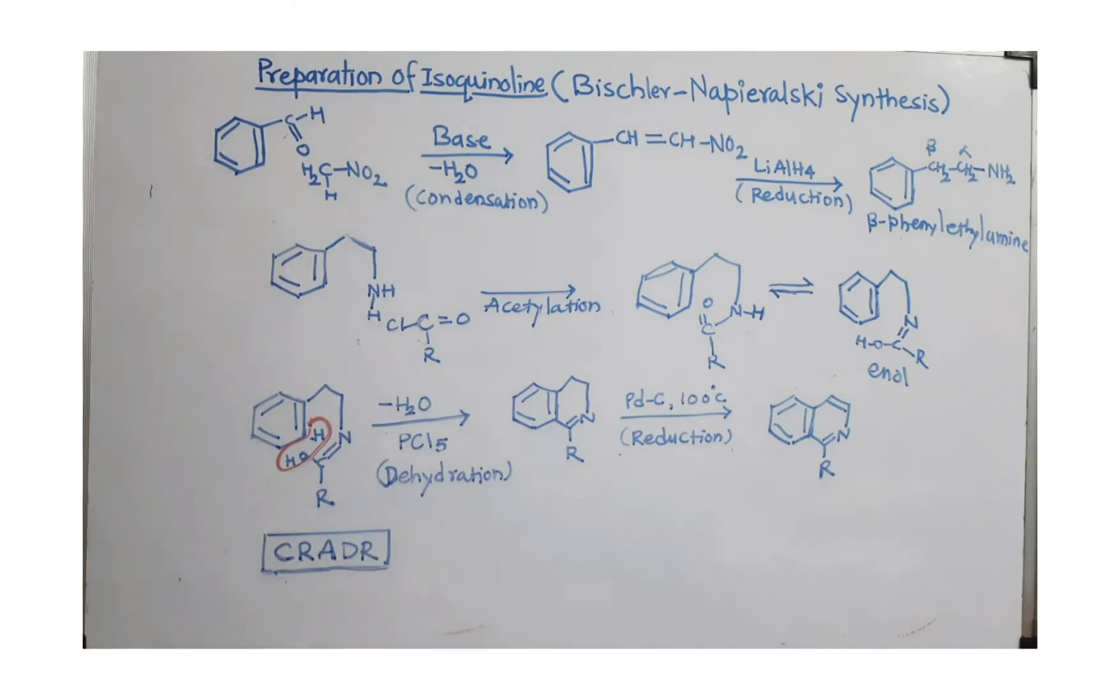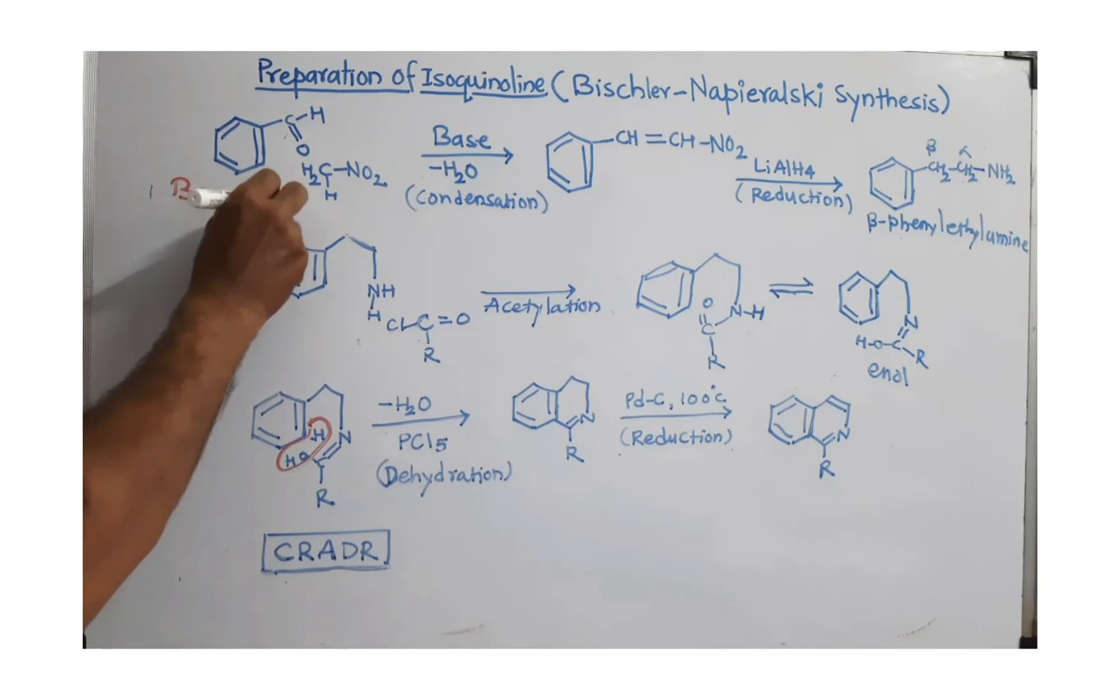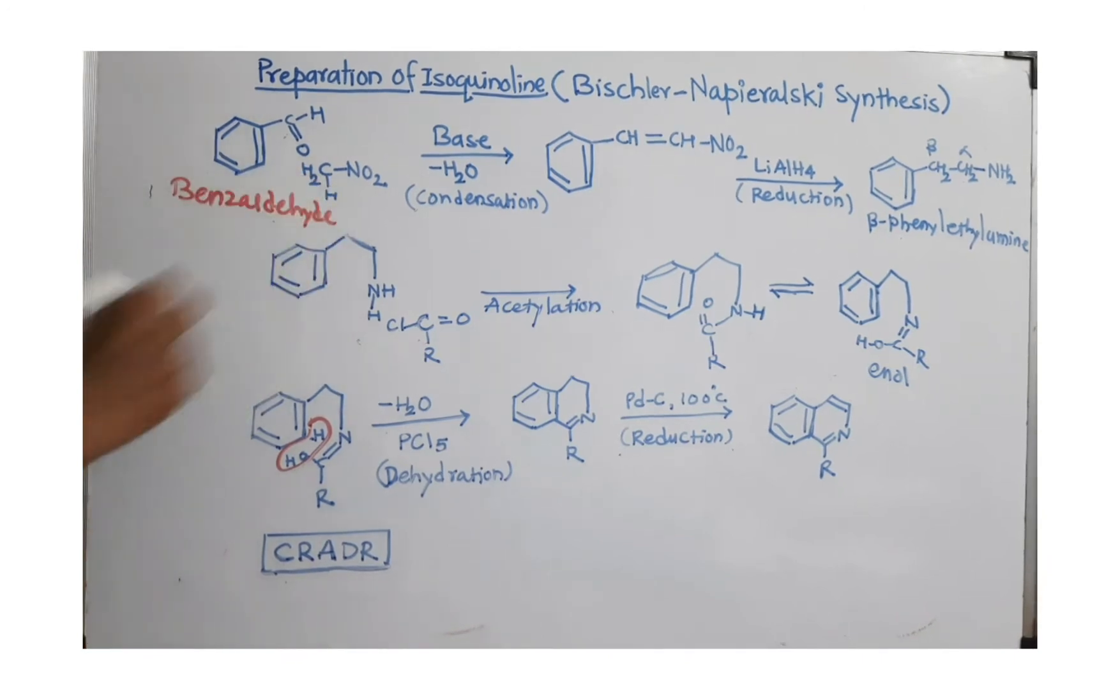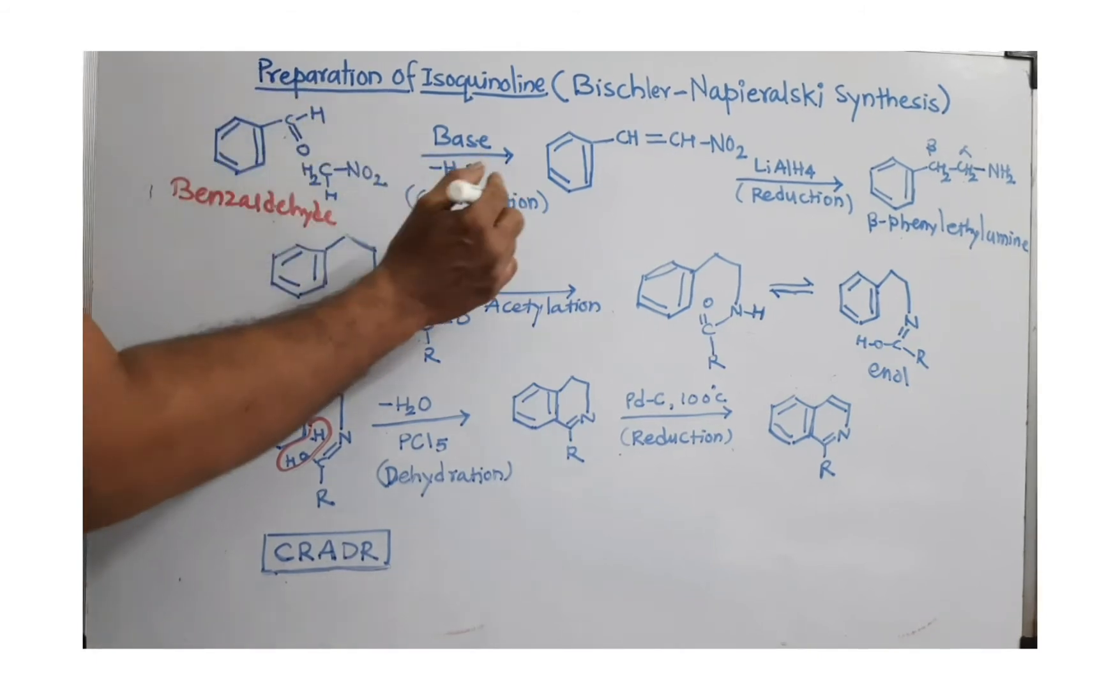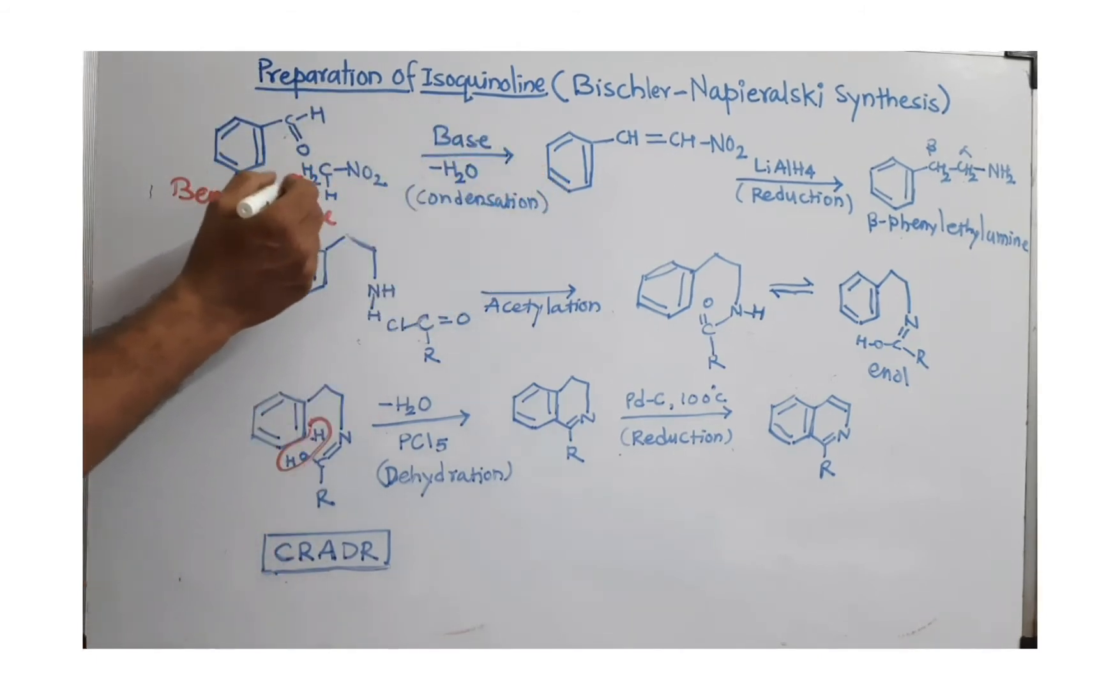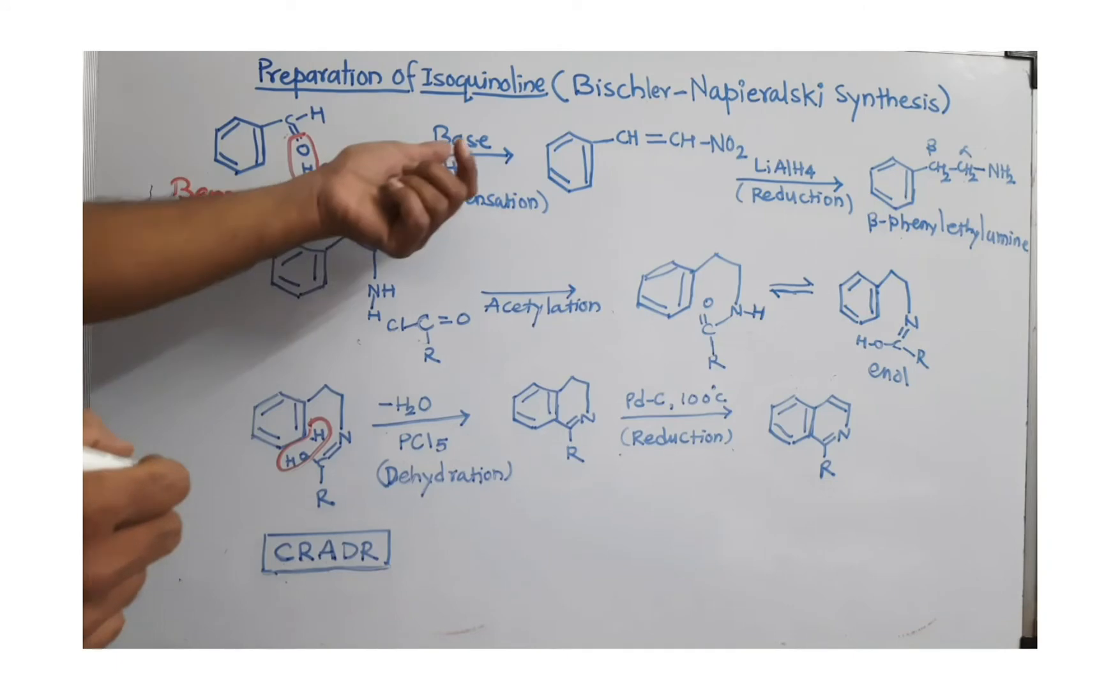For this synthesis, we need aldehyde. This aldehyde is benzaldehyde. So, we are taking benzaldehyde and another molecule is nitromethane. Purposely, I have written nitromethane like this because I have to perform condensation reaction. So, I remove 2H outside so I can join this 2H with oxygen to produce H2O.